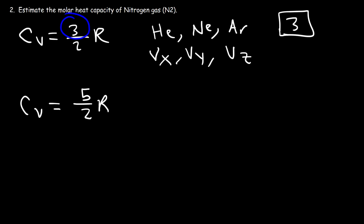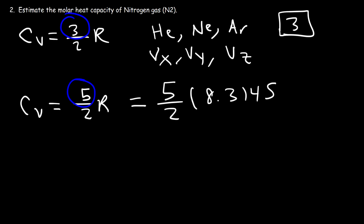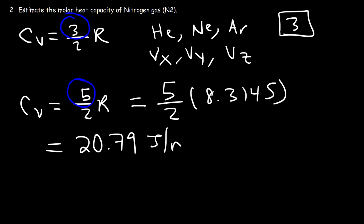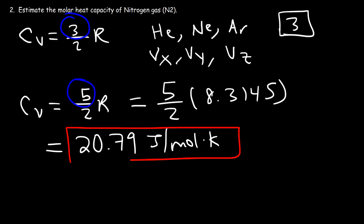The factor (5/2) represents the 5 degrees of freedom. So it's (5/2) times 8.3145, which works out to 20.79 joules per mole per kelvin. That's how we estimate the molar heat capacity of N₂, nitrogen gas.